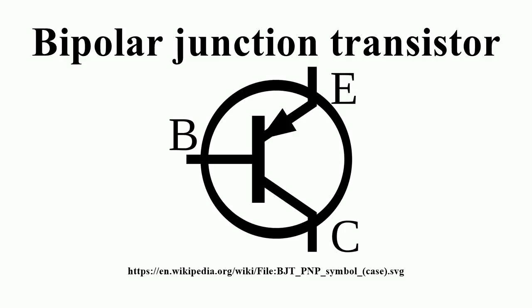A bipolar junction transistor is a type of transistor that uses both electron and hole charge carriers. In contrast, unipolar transistors, such as field-effect transistors, only use one kind of charge carrier.